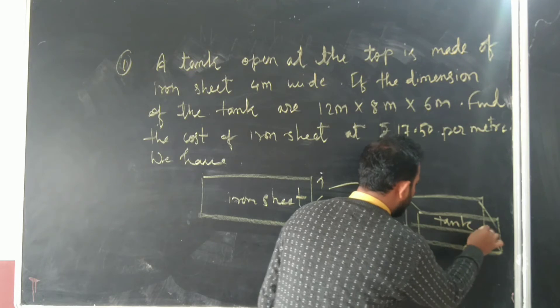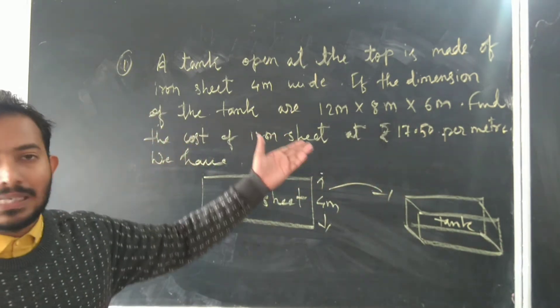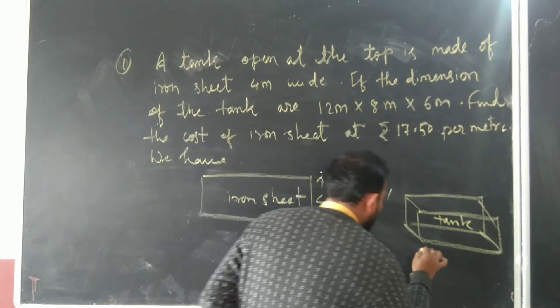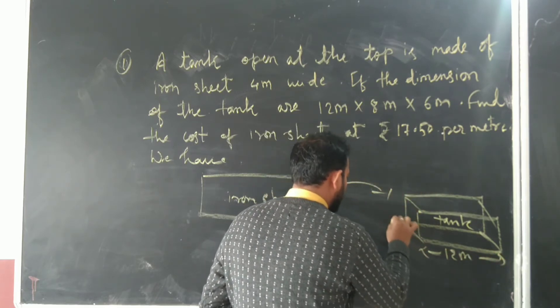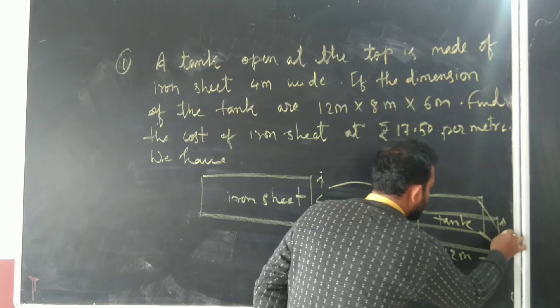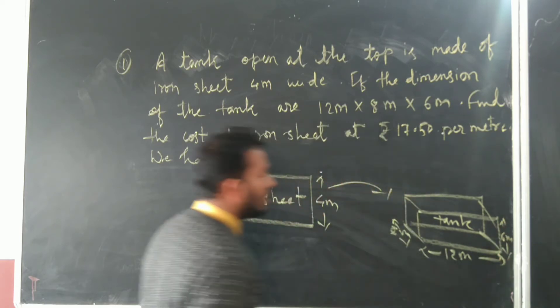This is your iron tank. Dimensions have been given: 12 meter length, 8 meter width, and 6 meter height.